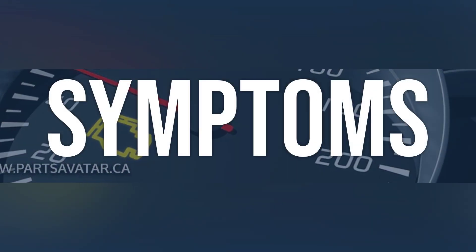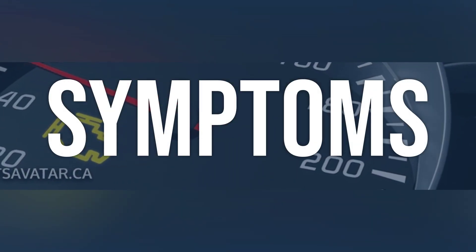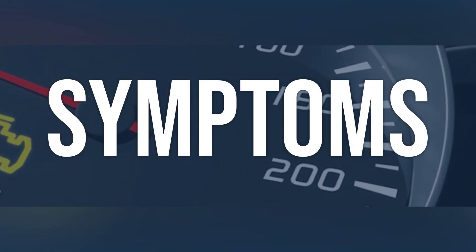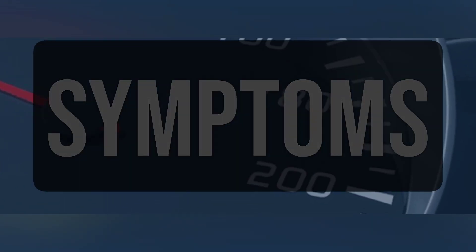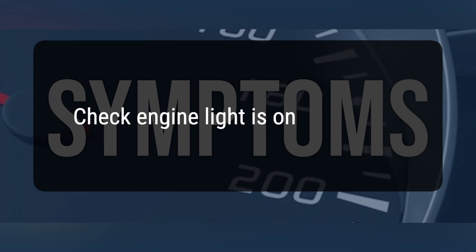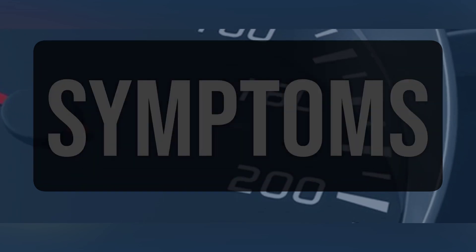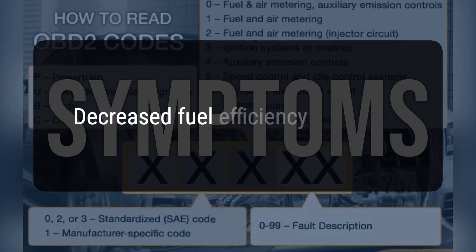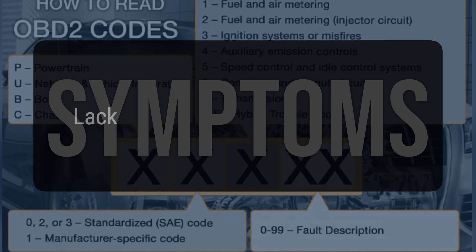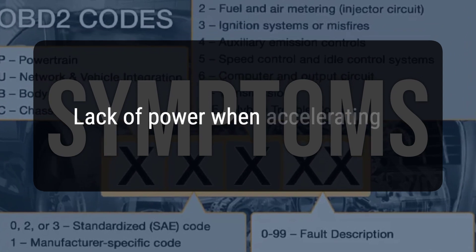When you encounter this OBD error, the vehicle typically exhibits the following symptoms: 1. Check engine light is on. 2. Decreased fuel efficiency. 3. Lack of power when accelerating.